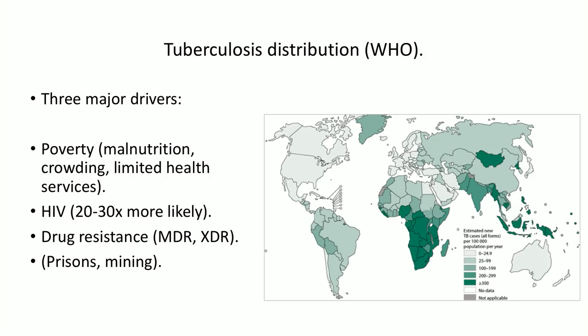There are three very major drivers of TB. The first is poverty, through a combination of malnutrition, crowding, and poor health services. The second is HIV — even before reaching advanced AIDS, HIV increases TB risk, and in people with advanced HIV disease the risk is 20–30 times higher than those without HIV. The third is drug resistance. Particular high-risk groups include people in prisons and those involved in mining, such as the gold mines in South Africa. TB tends to concentrate in places with one or more of these problems.